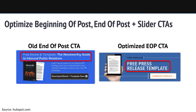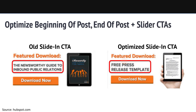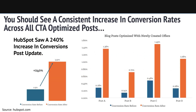Here are a couple more examples. At the end of a post, there was a call to action for a free e-book and template on public relations, but what they really want is just the press release template. In this case, a slider came out saying 'newsworthy guide to inbound public relations' — but make the slider say 'press release template.' Give them what they want based on data. This resulted in a 240% increase in conversions on those two calls to action, and you can see dramatic increases across the board for HubSpot, Digital Marketer, and everybody by doing this.